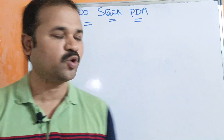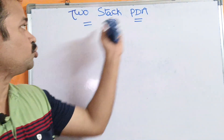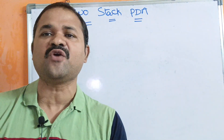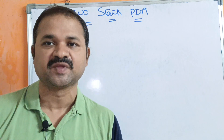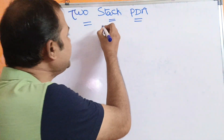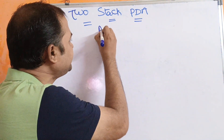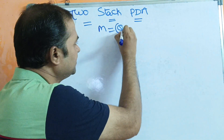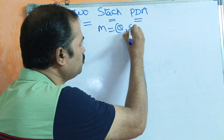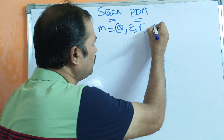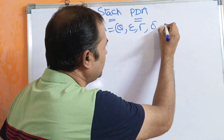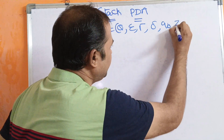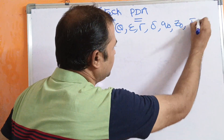Now let us discuss about two-stack PDA in theory of computation. We know that PDA is represented by seven tuples: Q, Sigma, Tau, Delta, Q0, Z0, and F.